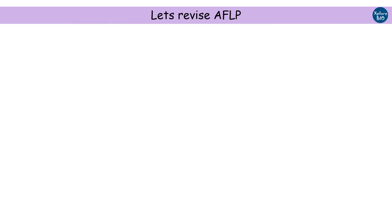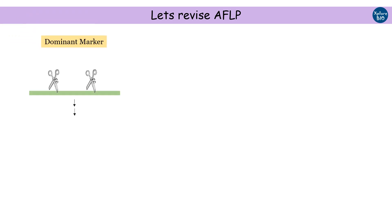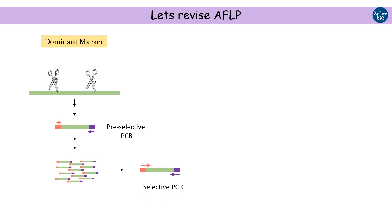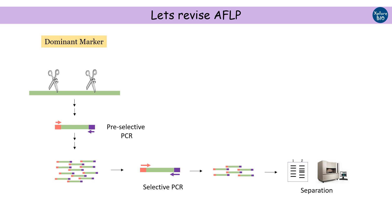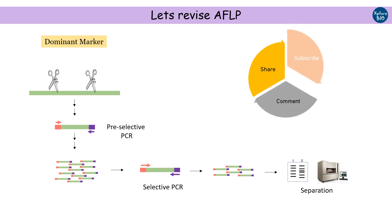Let's briefly revise what we have learned today. AFLP is a dominant type of molecular marker. It involves restriction followed by PCR amplification of genomic DNA. Primers and adapters are used for pre-selective and selective PCR amplifications. Fragments can be analyzed either on polyacrylamide gel or automated sequencers. If you like the video, please share it with your colleagues, mention in the comments what new you learned today, and subscribe and hit the bell icon to get notified when a new video is uploaded.